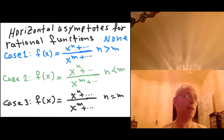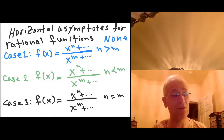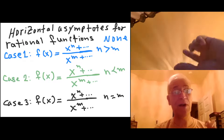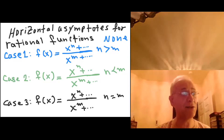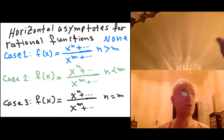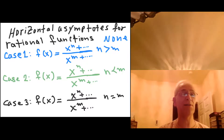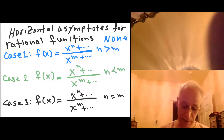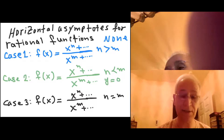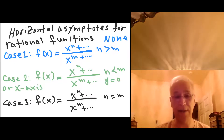Case 2: if the degree of the top is smaller than the degree of the denominator, then the denominator is getting larger and larger at a faster rate. Since the denominator grows faster, the numerator divided by a number that is much larger than itself approaches 0. So y equals 0, or the x-axis, is the horizontal asymptote.